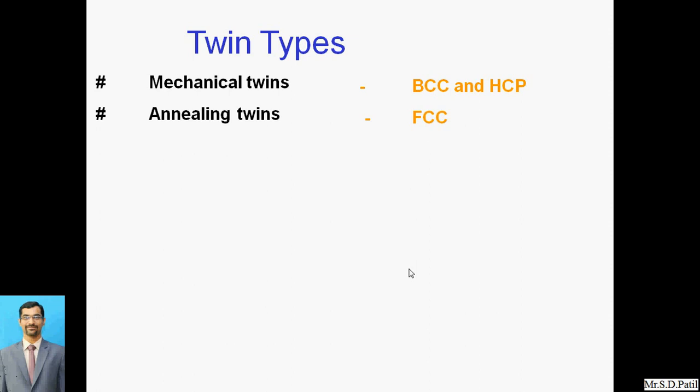Twin types are basically two types: mechanical twins and annealing twins. For mechanical twins, the two structures are BCC (body-centered cubic) and hexagonal close-packed structure. For annealing twins, it is the face-centered cubic structure.